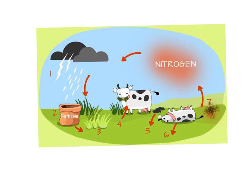At step one, nitrogen is introduced to the soil by precipitation. Nitrogen exists in our atmosphere naturally — 78% of our atmosphere is made up of nitrogen. The other 22% is made up of oxygen, carbon dioxide, and other greenhouse gases. As rain falls to the ground, it brings elemental nitrogen from the air down into the soil.